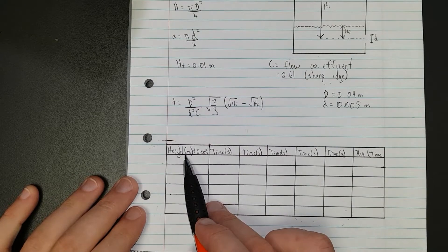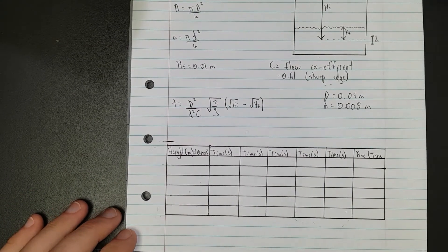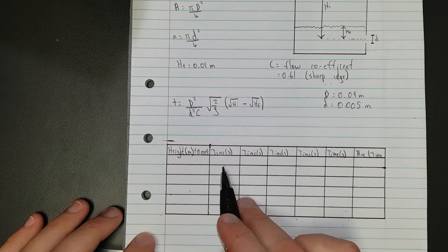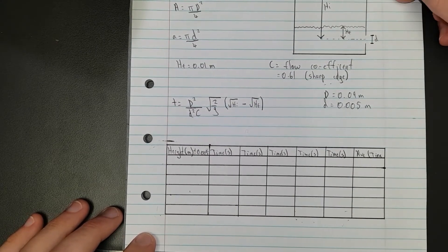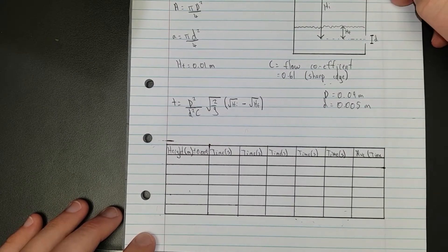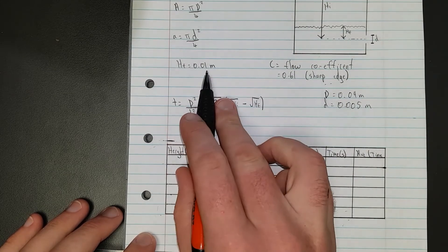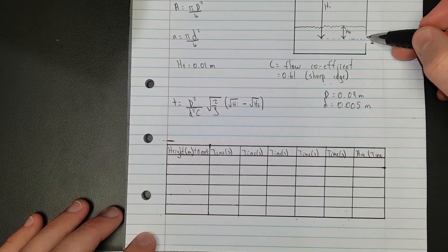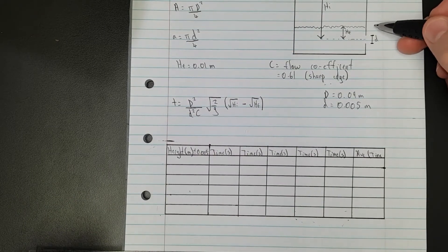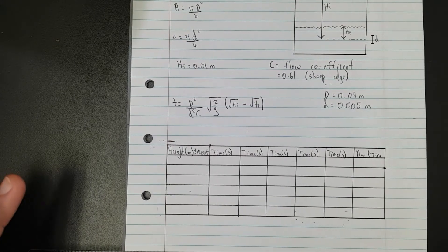My height is my independent variable because that's what I'll be changing - how much water I put into the water bottle. Time is the dependent variable. I'll be recording from when I first open the hole and let the water start draining to when the water gets one centimeter above the hole. You'll see on the bottle I've measured out the heights.